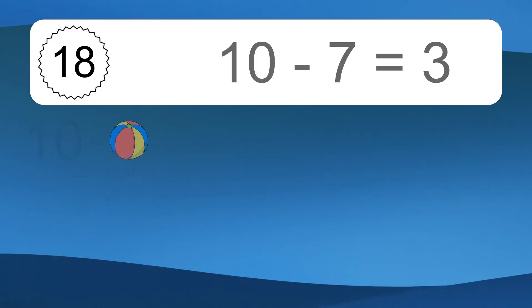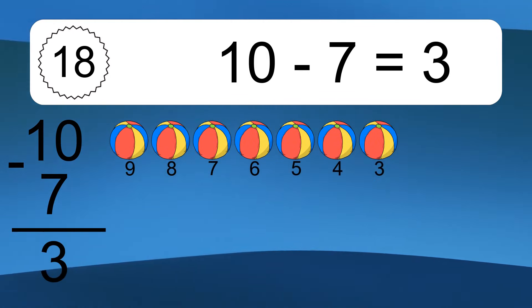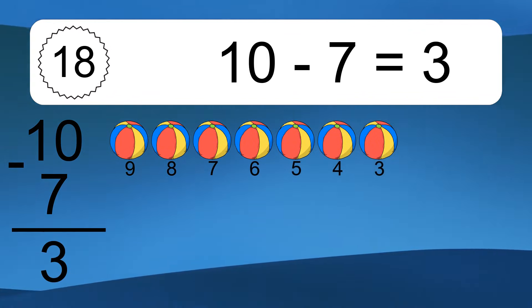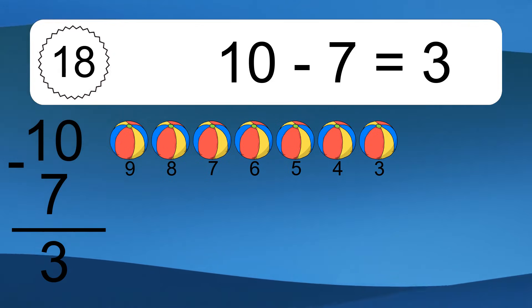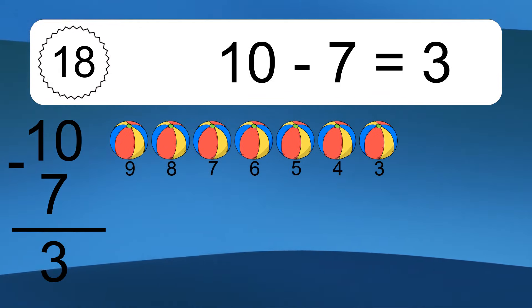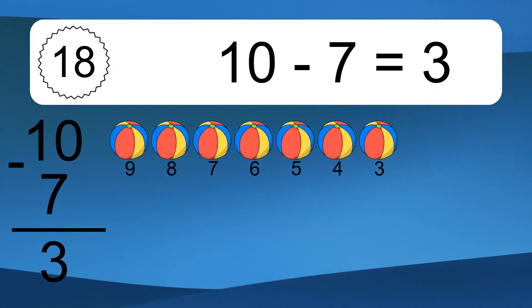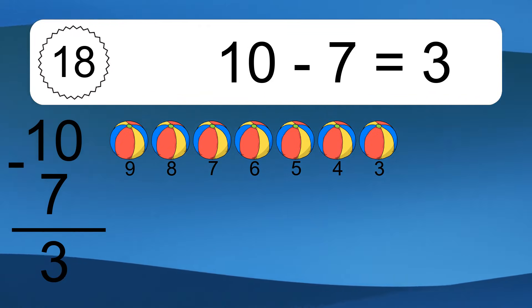10 minus 7 equals 3. Let's count it: 9, 8, 7, 6, 5, 4, 3.